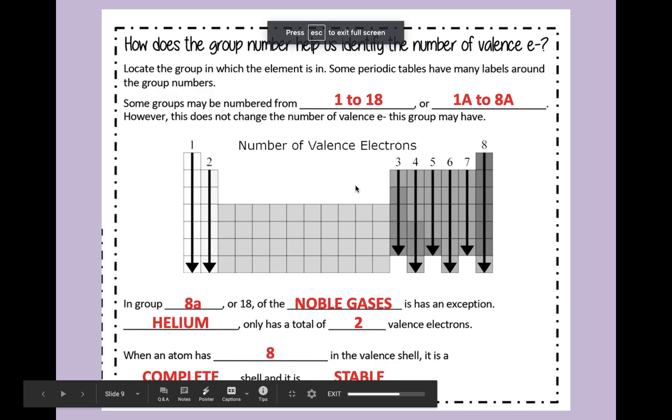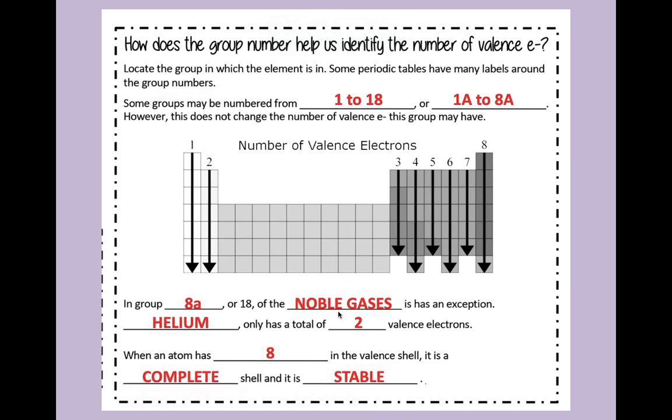Now, eight is that magic number. Eight makes everybody happy. It is complete. It is an outer shell. So when eight is in that outermost ring, it is happy and it is stable. And that's what everyone strives to be.